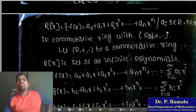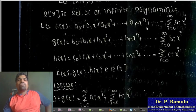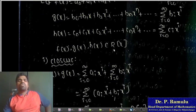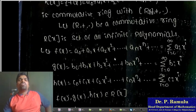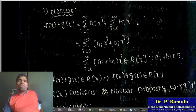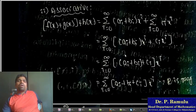To show R[x] is a commutative ring with addition and multiplication: Let R be a commutative ring. Take f(x), g(x), h(x) in R[x]. Closure property: for f(x), g(x) in R[x], f(x) + g(x) = sum (a_i + b_i) x^i. Since a_i + b_i belongs to R, this expression belongs to R[x], so R[x] satisfies the closure property.